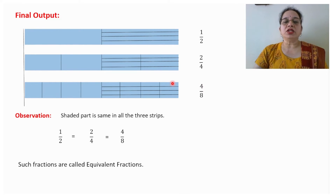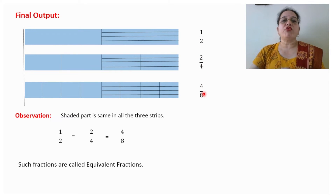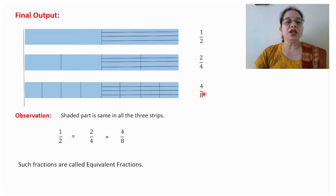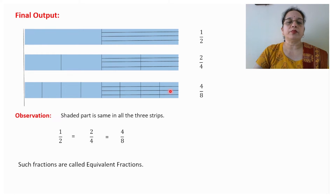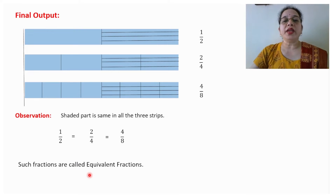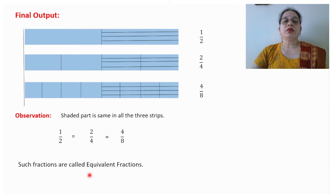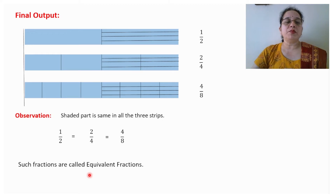Now, what is the observation? The fractions are different — 1/2, 2/4, 4/8 — fractions are different, but you can see that everywhere the shaded part is the same. What does it mean? The value of these fractions is the same. Such fractions are called equivalent fractions, where fractions look different but when you convert them to simplest form, the simplest form will be the same.